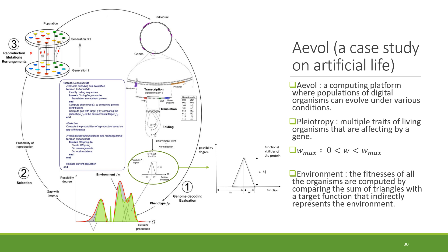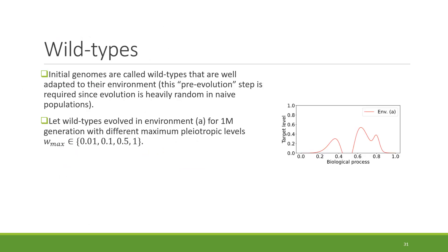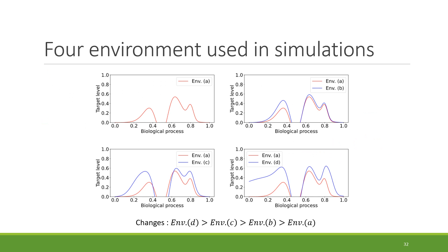In EvoL, we can set a maximum value for the width of the triangle, called Wmax, so width can change between 0 and Wmax. To calculate the fitness of organisms, we compare the sum of triangles against a target function called the environment. Before simulating, we create four wildtypes with four different Wmax values, evolved for one million generations in environment A. We also consider four different environments: A, the same as the initial genomes, and B, C, and D, which differ increasingly from environment A.